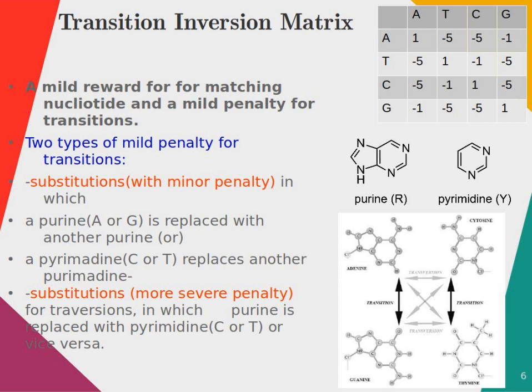The nucleotide bases in DNA and RNA include nitrogenous bases in the form of purines and pyrimidines. Purine bases are adenine and guanine, having two carbon-nitrogen rings. Pyrimidine bases such as cytosine and thymine have one carbon-nitrogen ring. So there are two rings for purines and only a single ring for pyrimidines. When a purine, that is A or G, is replaced with another purine, we consider that substitution as a minor penalty with value minus 1.